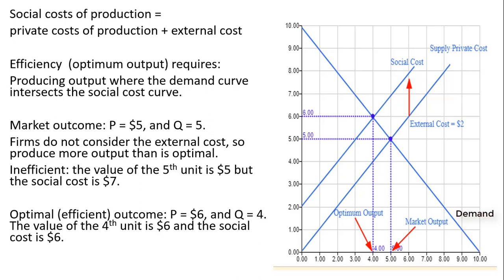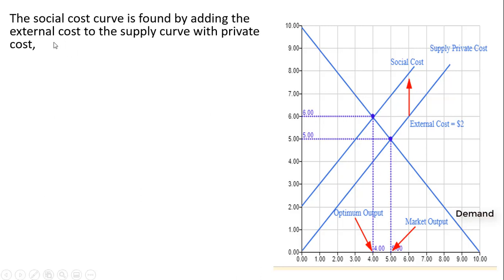We don't want to produce beyond four units of output — otherwise the social cost curve will rise above the demand curve (maximum willingness to pay). The social cost curve is found by adding the external cost to the supply curve with private cost. The external cost is the vertical distance between the two supply curves.